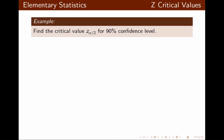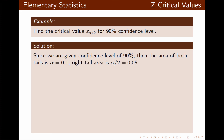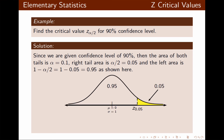Now let's find the critical value for a 90% confidence level. We are given a confidence level of 90%, which leaves 0.1 area for both tails. Dividing by 2 gives 0.05, which is the area of each tail. So if the right area is 0.05, then the remaining area under the curve is 0.95.